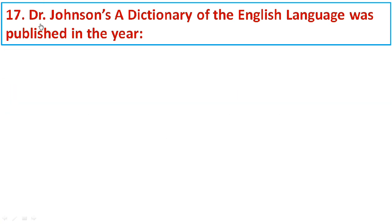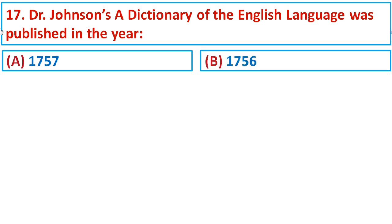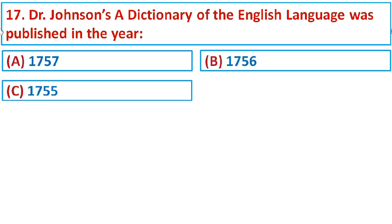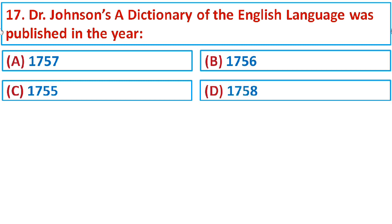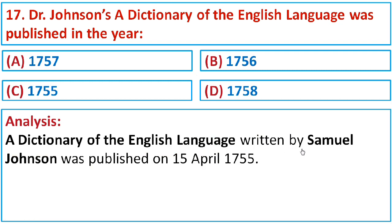Question number seventeen: Dr. Johnson's Dictionary of the English Language was published in the year Option A: 1757, Option B: 1756, Option C: 1755, or Option D: 1758. A Dictionary of the English Language, written by Samuel Johnson, was published on 15th April 1755. The correct option is C: 1755.